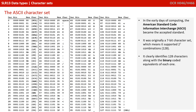In the early days of computer science, ASCII — the American Standard Code for Information Interchange — became an accepted standard. ASCII was a 7-bit character set. This means there were 2 to the power of 7 combinations of bits, which is 128 different combinations, and therefore it identified 128 characters and their binary codes or denary equivalents.